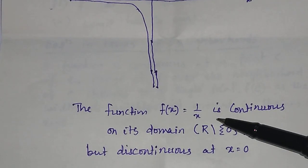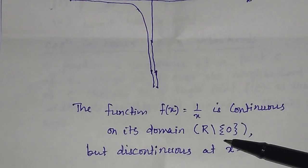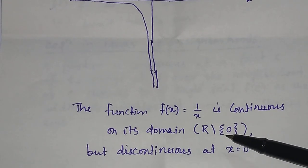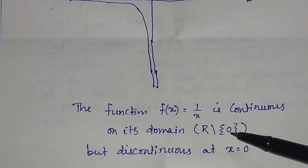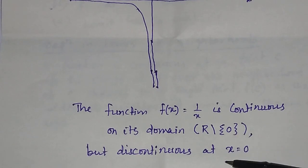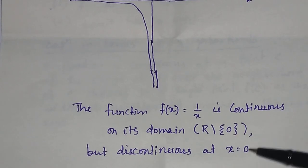The function f(x) = 1/x is continuous on its domain, that is, the real numbers minus the set containing 0. But it is discontinuous at x = 0.